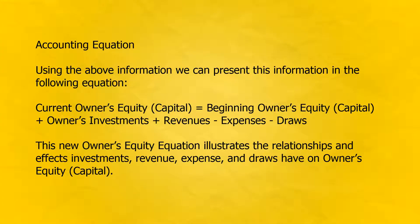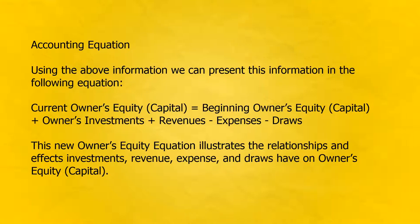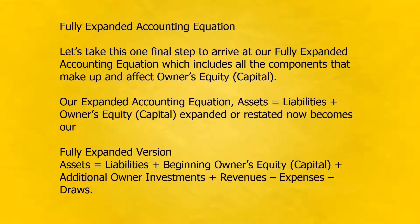Accounting equation. Using the above information we can present this in the following equation. Current owner's equity capital equals beginning owner's equity capital plus owner's investments plus revenues minus expenses minus draws. This new owner's equity equation illustrates the relationships and effects that investments, revenue, expense, and draws have on owner's equity capital. Let's take this one final step to arrive at our fully expanded accounting equation: assets equals liabilities plus beginning owner's equity capital plus additional owner investments plus revenues minus expenses minus draws.